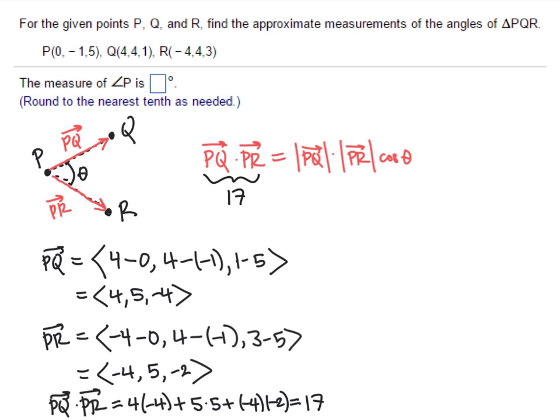What about the magnitude of these two vectors? The magnitude of PQ is going to be the square root of the squares of the components of PQ. So that's the square root of 4 squared plus 5 squared plus negative 4 squared, which is the square root of 57. Similarly, the magnitude of PR works out to be the square root of 45.